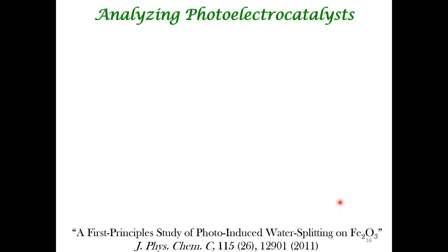If it has a band gap of around 2 to 2.2 eV, that's very advantageous — it can absorb lots of solar energy. If you look at rust (Fe₂O₃), it's very dark brown, and whenever something is very dark, it can absorb a lot of sunlight — that's why it's dark.